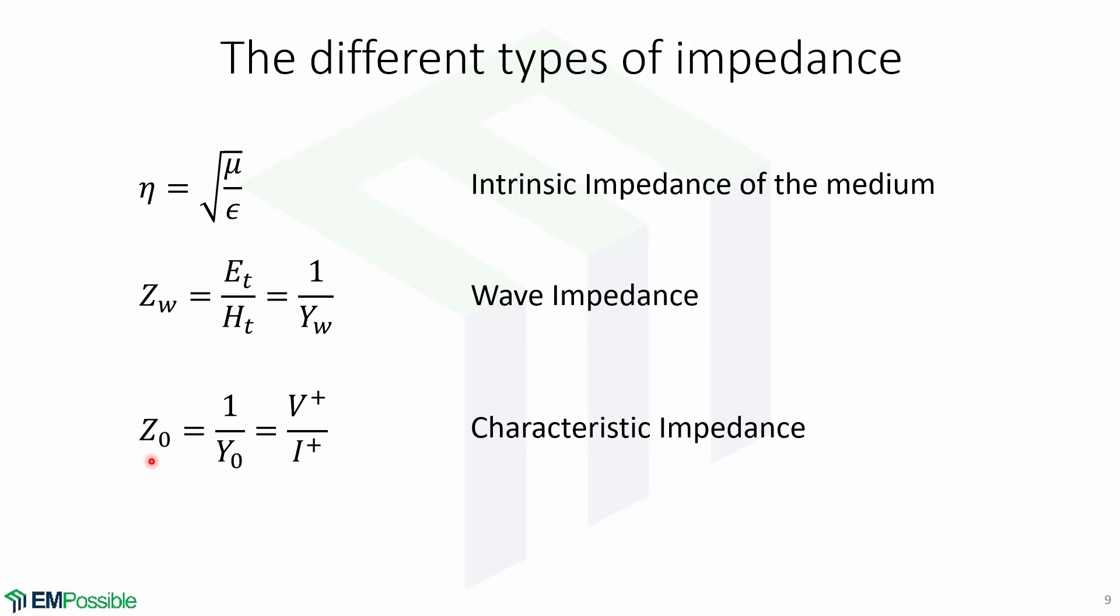We have also seen the characteristic impedance, the admittance, which is the reciprocal of the impedance, which is also the ratio of the voltage over the current.